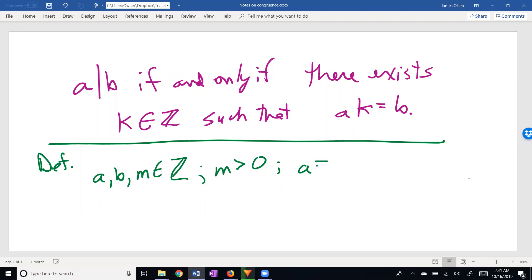A is congruent to B modulo M, and this is our notation, if and only if M divides evenly into A minus B.